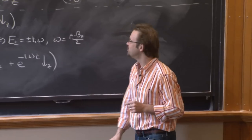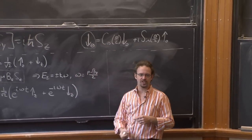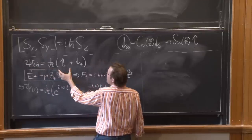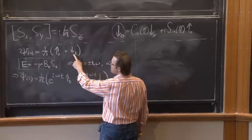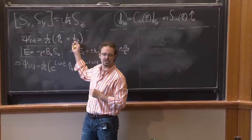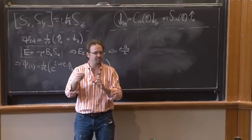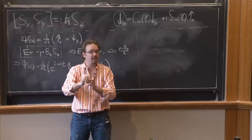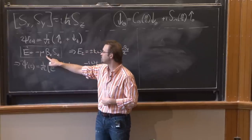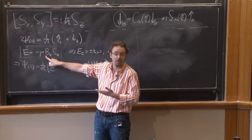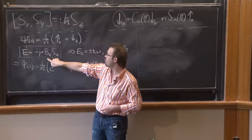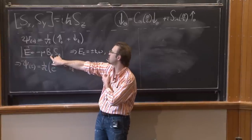We then did the Stern-Gerlach experiment. The core of it is this: suppose I have some spin and I put it in the state up in z plus down in z with equal amplitudes — equally likely to be measured. These two states should be degenerate in energy because the system is rotationally invariant. But we can break that symmetry and break the degeneracy by turning on a magnetic field. For a constant magnetic field in the z-direction, the contribution to the energy is minus B · μ, which is a constant times the spin, so this is just B_z · S_z.